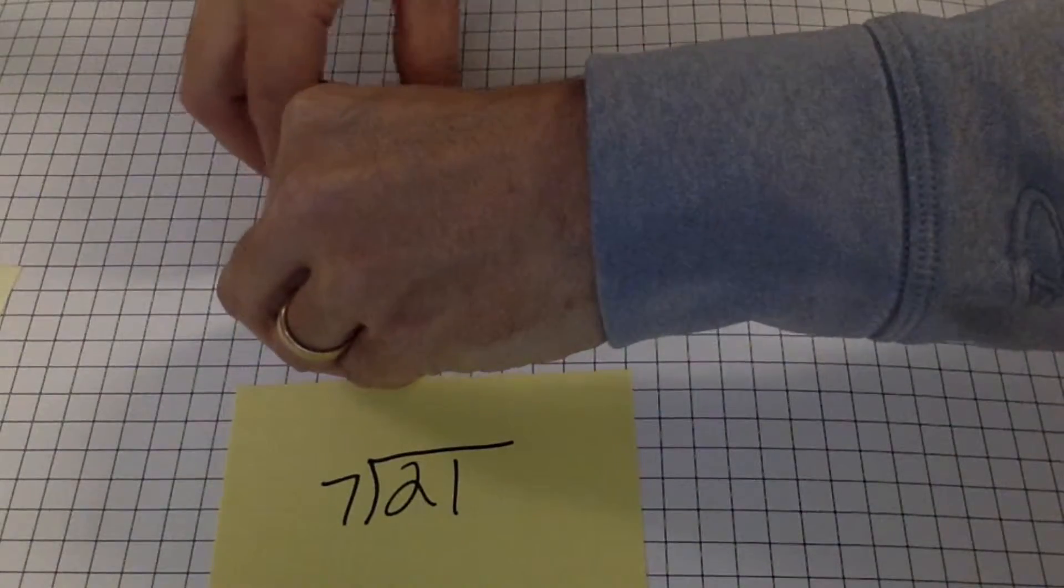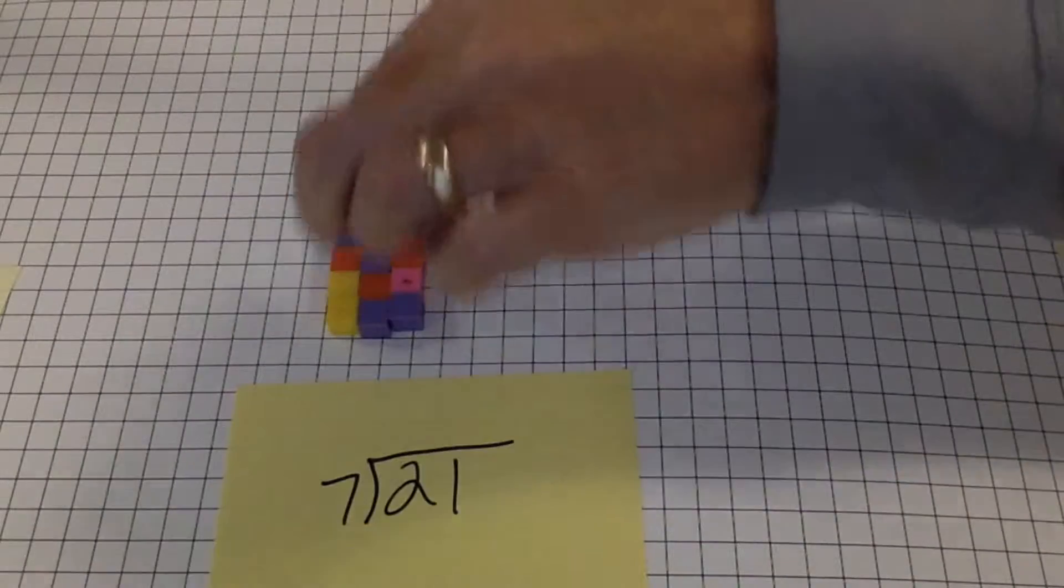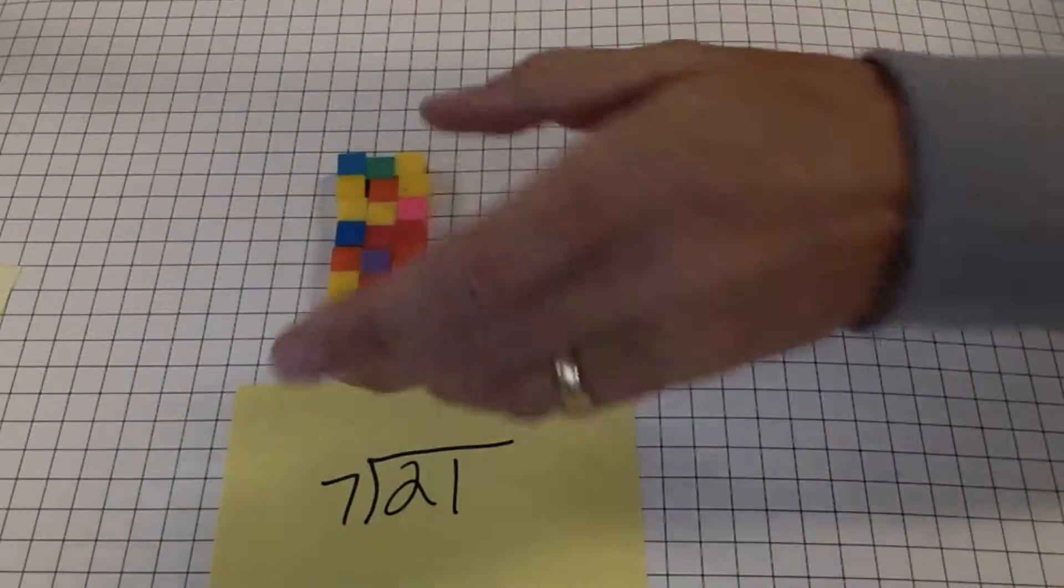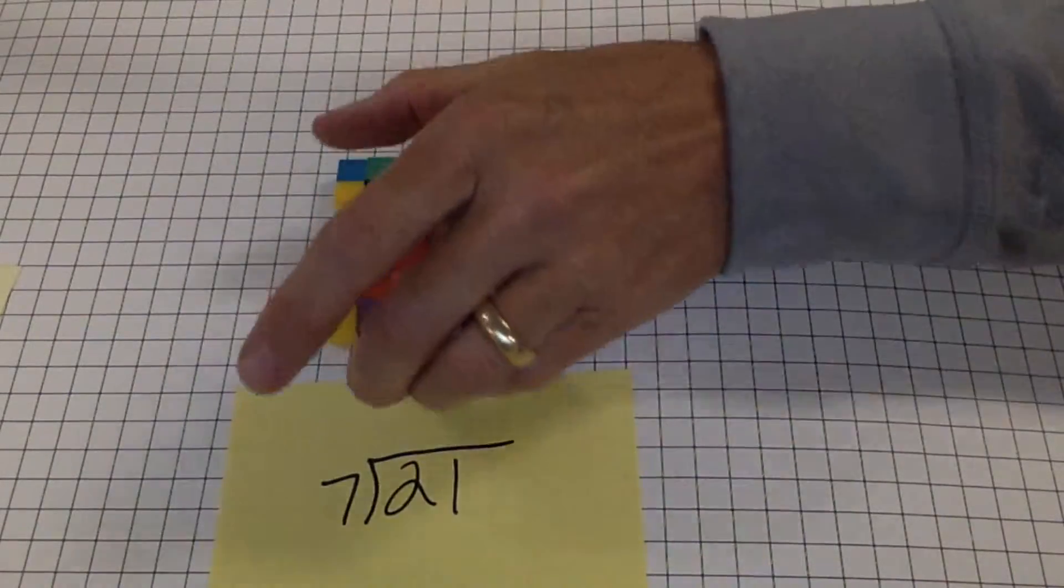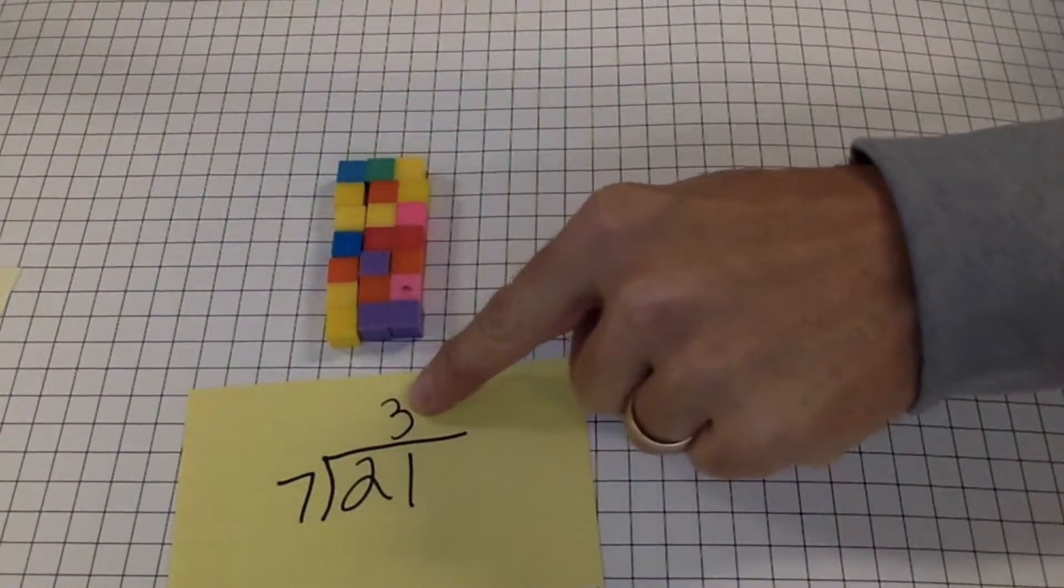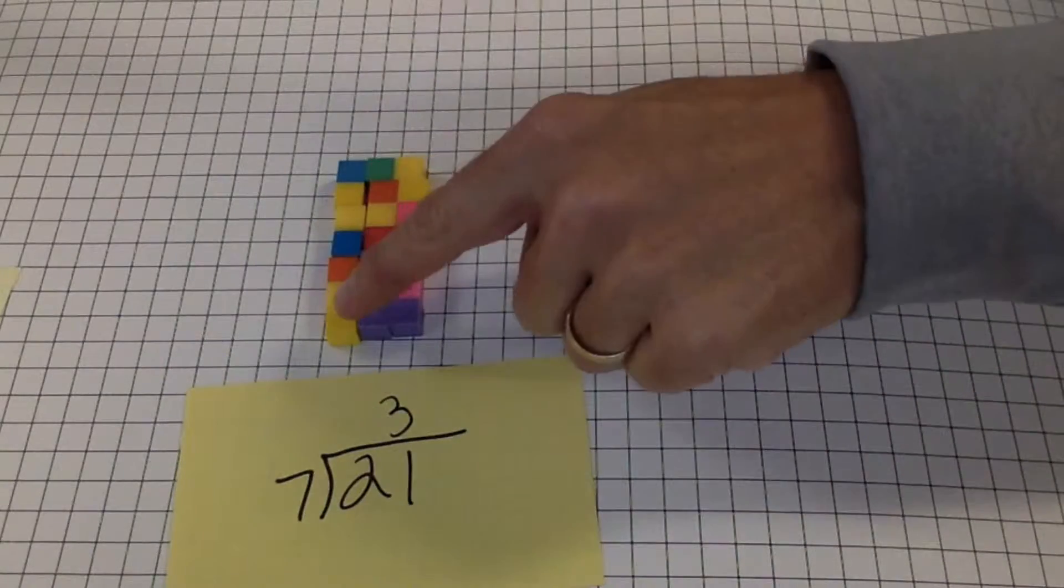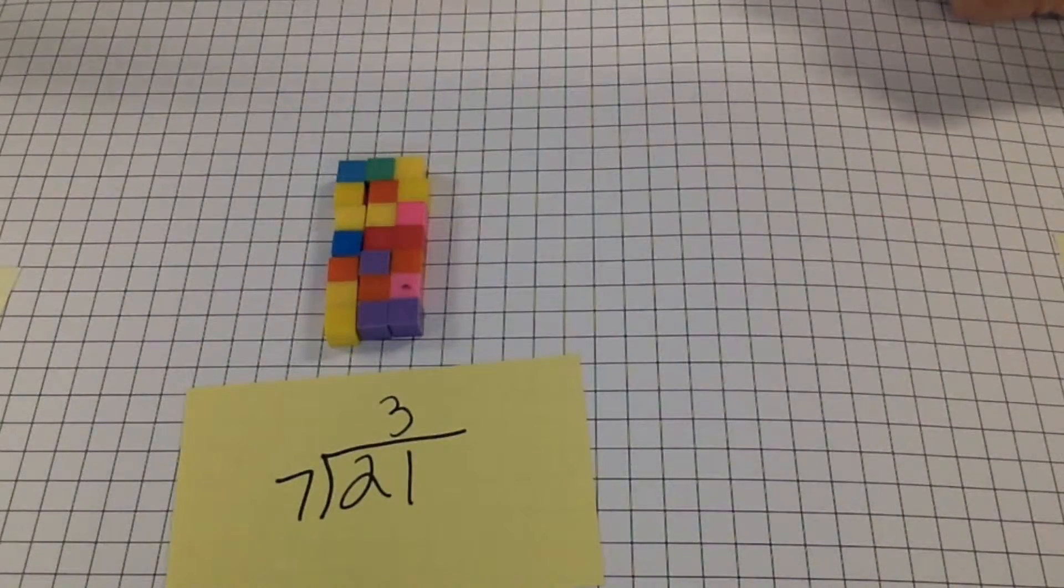So I've put down 21 cubes. I've got them in rows of 7. And there's 1, 2, 3 columns if you want to look at it that way. So the answer for 21 divided by 7 is 3. The quotient is 3. If I have 21 in rows of 7, I have 3 columns.